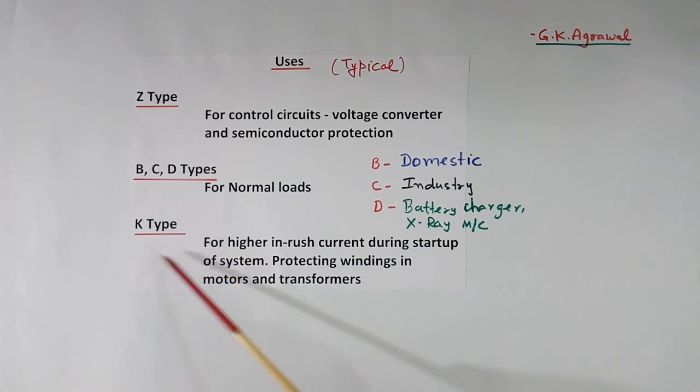K type is used when higher inrush current during start up of system is there. For example in motors and transformers. When we switch on, heavy inrush current flows. There we use K types.